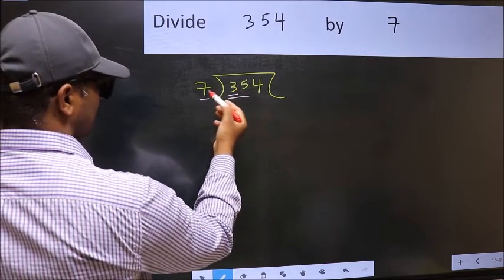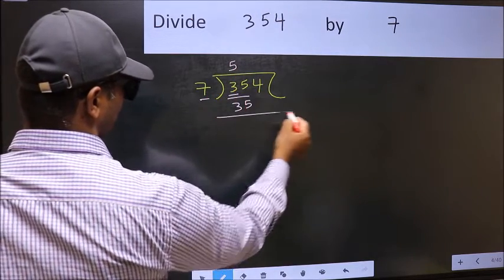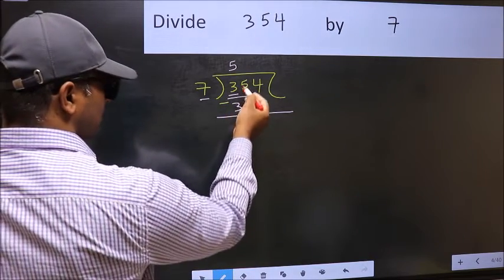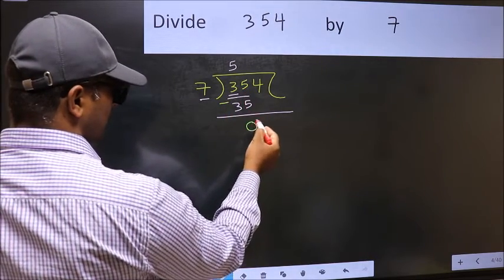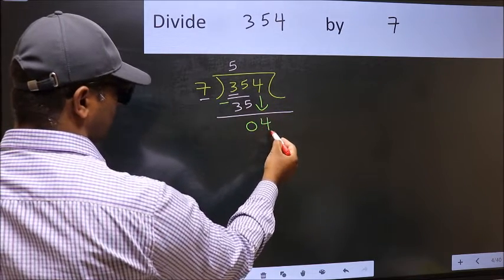When do we get 35 in 7 table? 7 fives, 35. Now you should subtract. 35 minus 35, 0. After this, bring down the beside number. So 4 down.